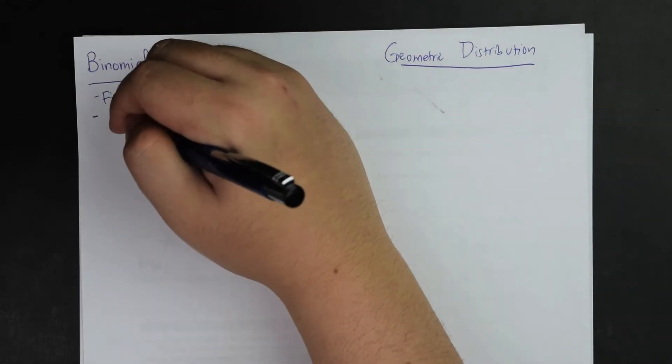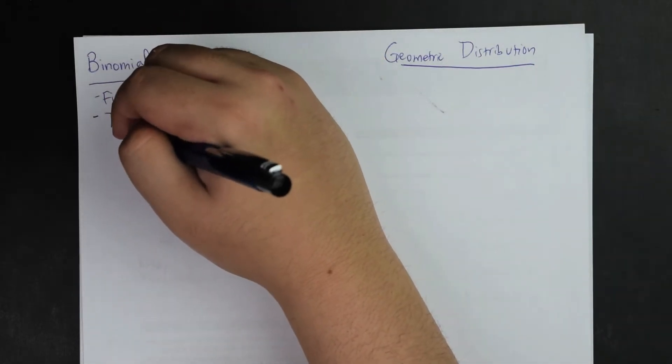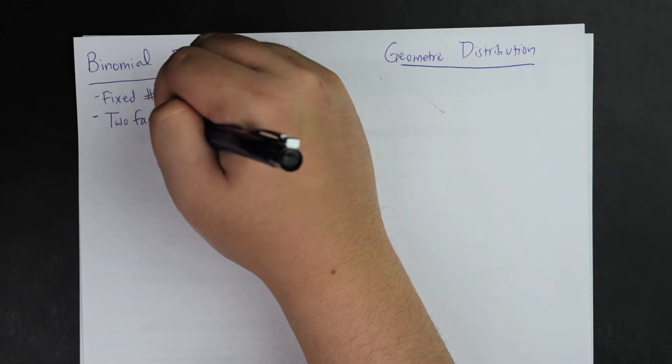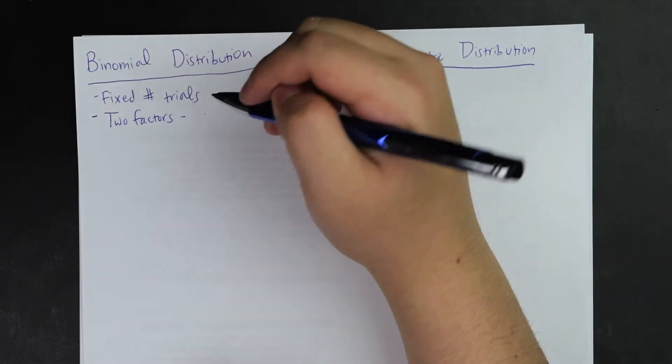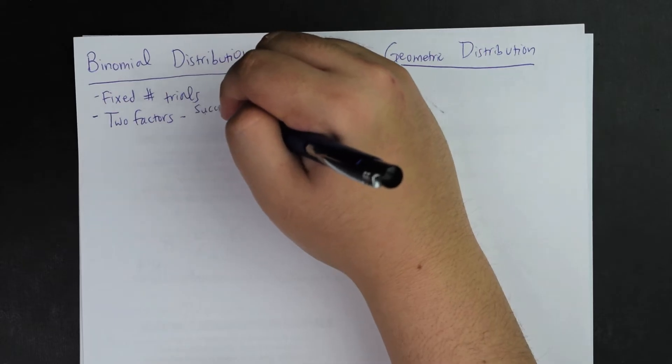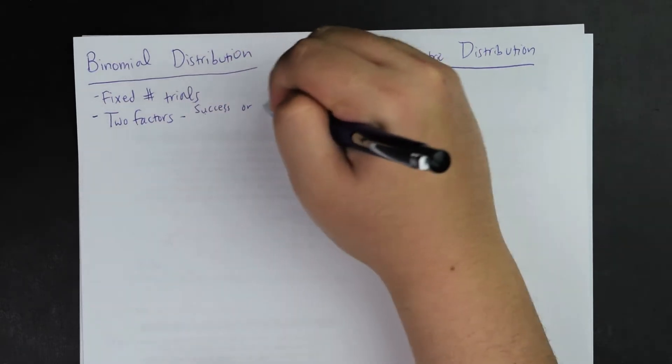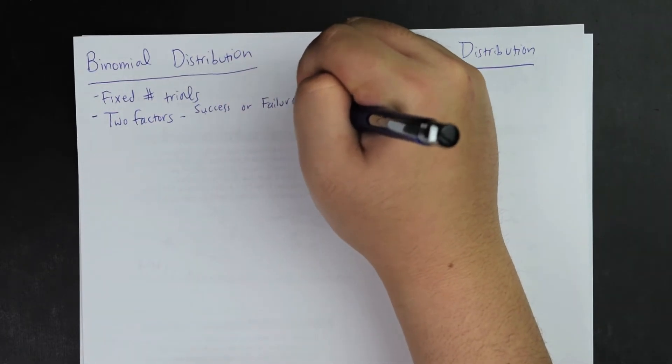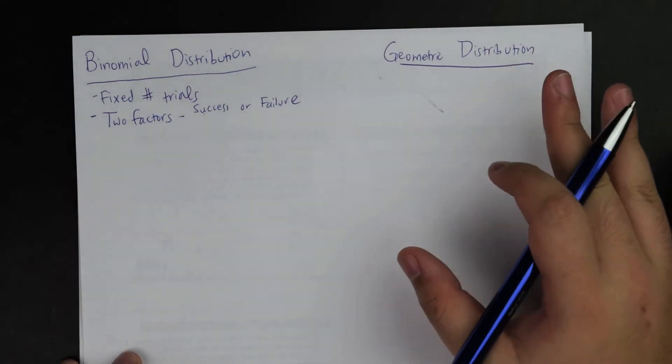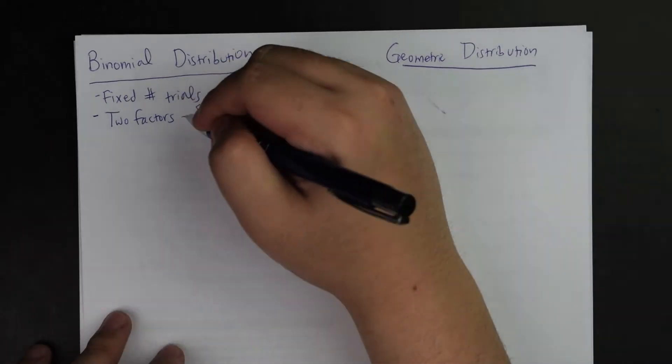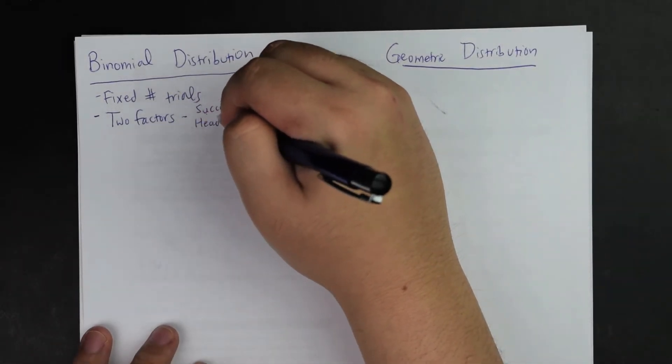Usually this is based on two possible factors. What I mean by two factors is that either there is success or failure, is one possible example. But this example also extends out to other possibilities that geometric distribution doesn't really go into depth on. It could be possibly heads versus tails. It could be even male versus female.